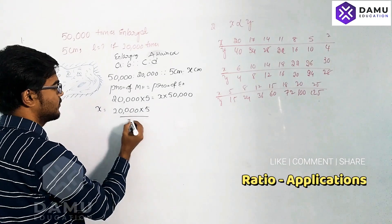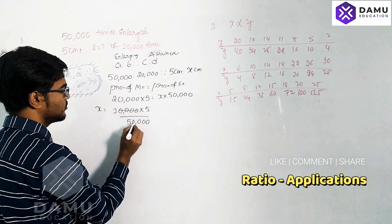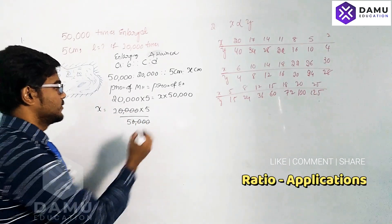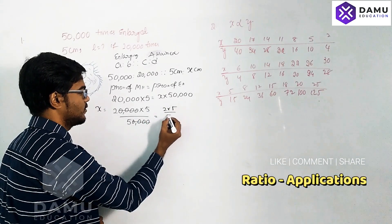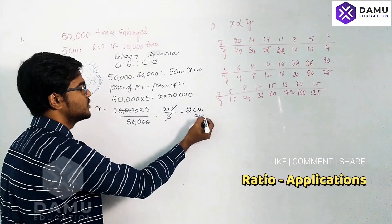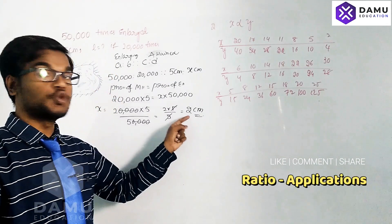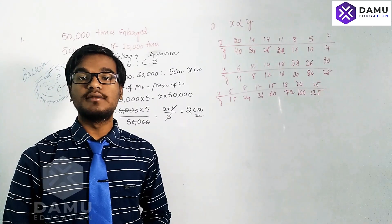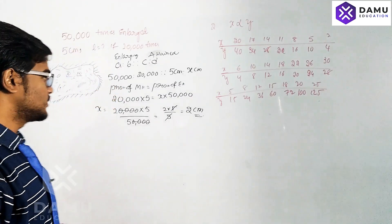The four zeros cancel, giving 2 into 5 divided by 5. The fives cancel, so the attained length for the bacteria is 2 centimeters. Now let's solve the same problem using the unitary method.